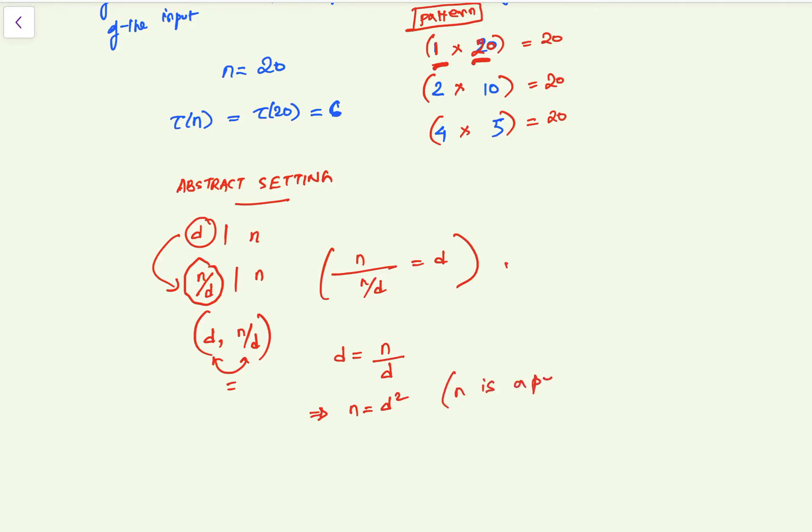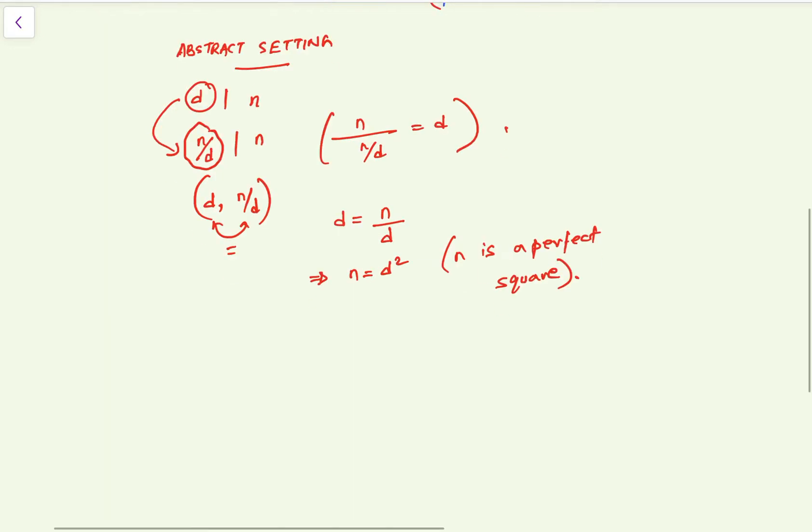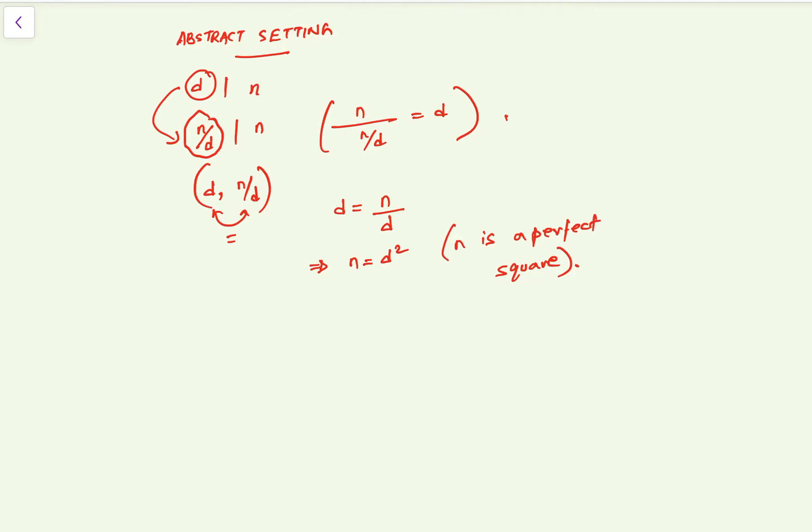Well it can. If we set d equals to n over d, then we will have n equals to d squared, which immediately tells us that n is a perfect square. So in the case of perfect squares, one pair will be made out of non-distinct members, created by, while all other pairs will have distinct members.